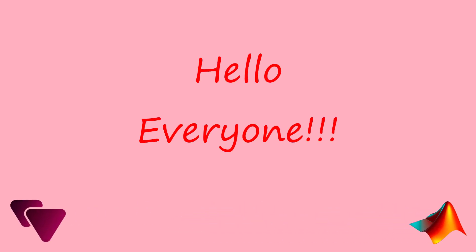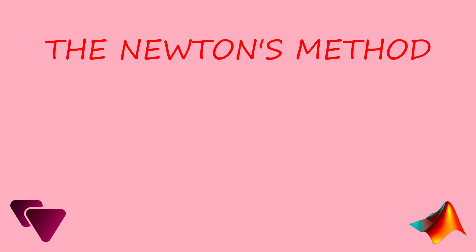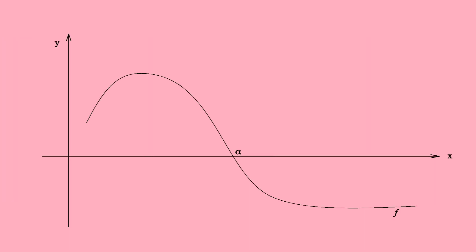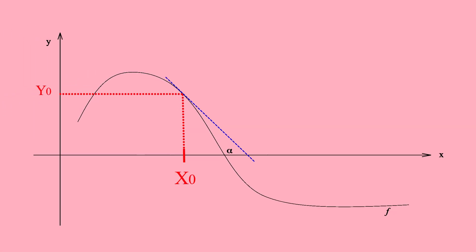Hello everyone. In this video I will talk about another numerical method for solving equations. It is called Newton's method. In this method you need a first guess on your root — I call it x0. Then find the value of the function at this point, y0. Then draw the tangent line to the function at this point until it crosses the x-axis, then repeat the process. One difference of this method, comparing to the secant method and the bisection method, is that it only needs one starting point.